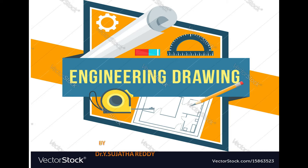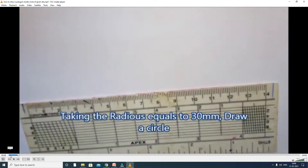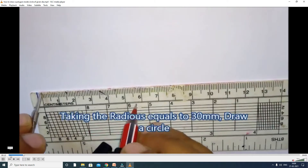Inscribed means all sides are within the circle. In this video, we discuss inscribed circle polygons — how to draw the inscribed circle polygons. Draw a polygon inside a circle of given diameter and number of sides. Inscribe a regular polygon of any given circle diameter.